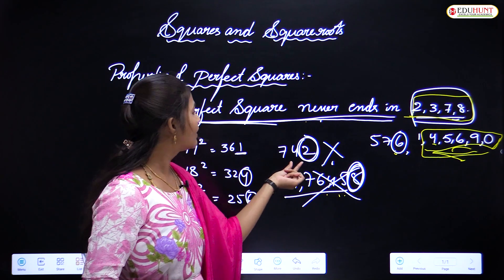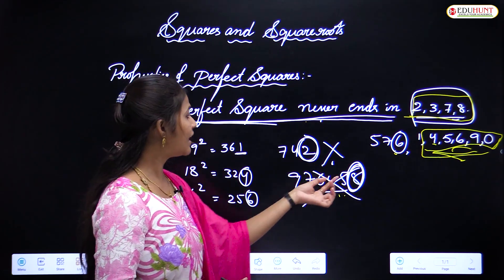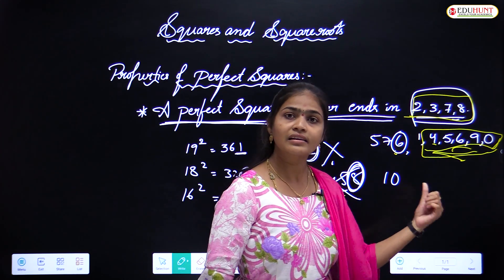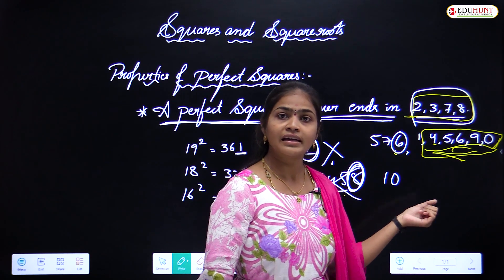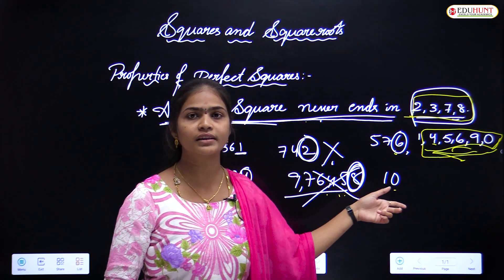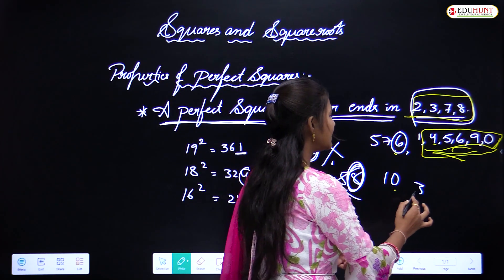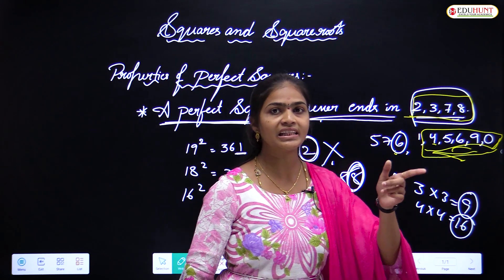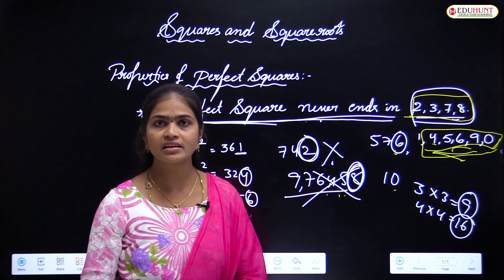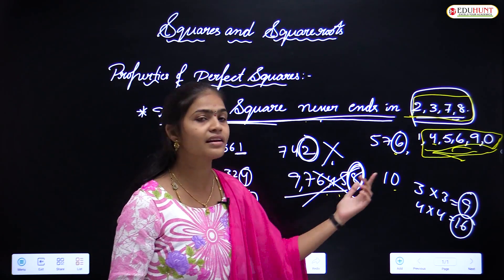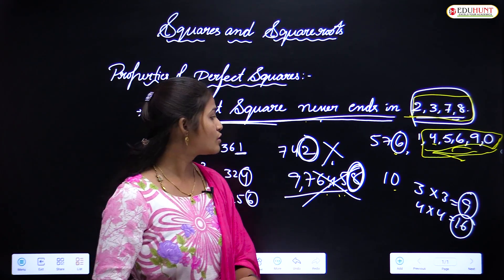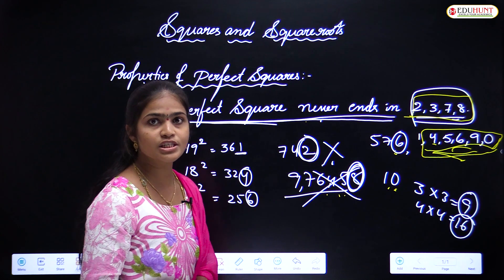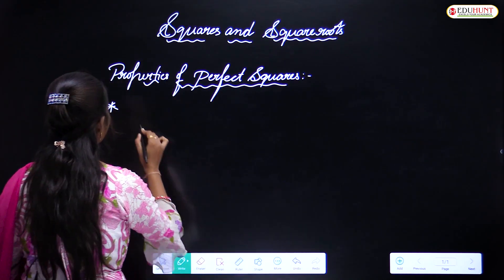For example, 10 ends in 0, so we have to check whether it is a perfect square. Since 3 squared is 9 and 4 squared is 16, no natural number squared gives 10, so 10 is not a perfect square. This first property lets us quickly eliminate numbers ending in 2, 3, 7, or 8 as perfect squares.